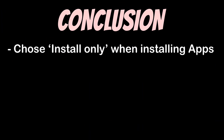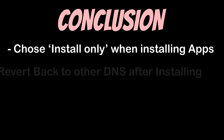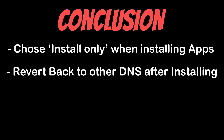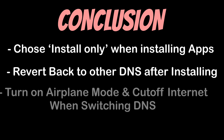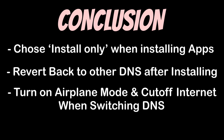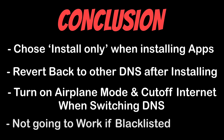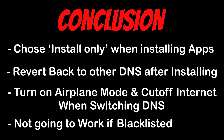So in a nutshell: choose the install only DNS only when installing apps, and after installation switch back to any DNS setup other than install only. Turn on airplane mode and cut off internet when switching DNS. If you are already blacklisted, this method won't work.